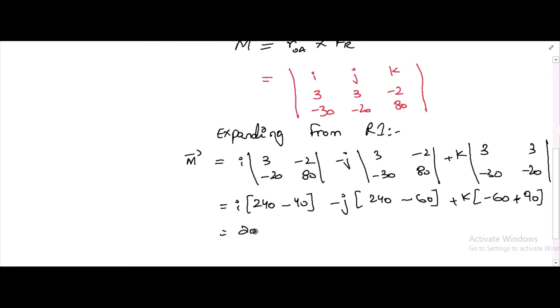So it is 200i minus 180j plus 30k. This is the moment of these two forces about point O.